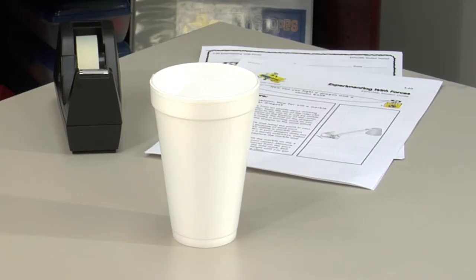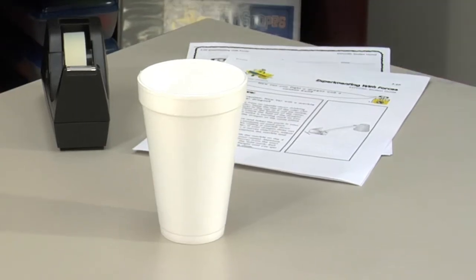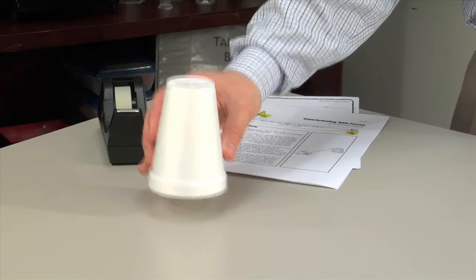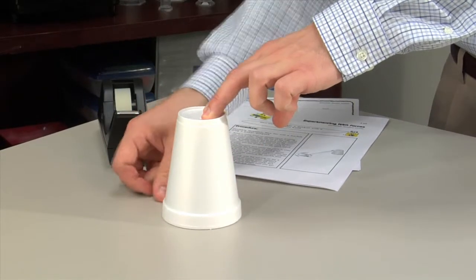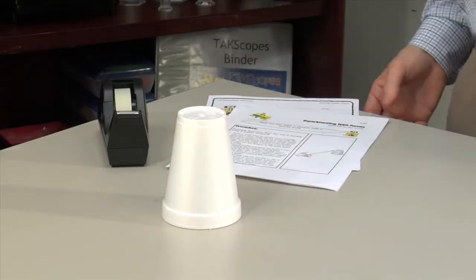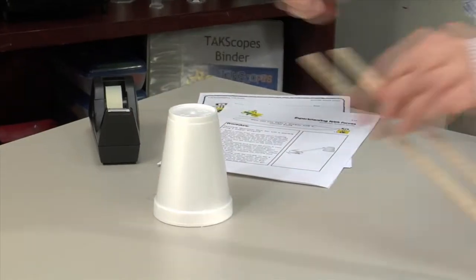Let's prepare the ramp. Take a styrofoam cup and turn it upside down. For stability, use tape to secure the cup to the table and attach the 30-centimeter end of the ruler to the cup.